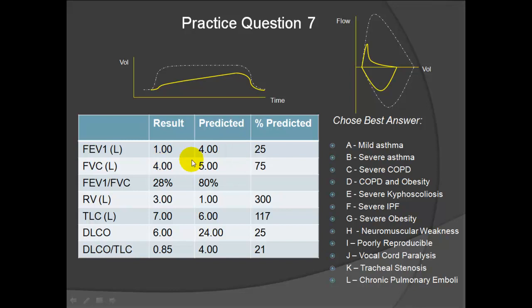Question 7: We see severe obstruction — in fact, we saw this curve earlier in the first example with a severe asthmatic. Obstruction is confirmed by a very low FEV1 ratio and air trapping with an elevated RV and TLC. However, unlike the severe asthmatic who had a diffusion capacity of 105%, this patient has a diffusion capacity of 25%, which stays quite low even when corrected for total lung capacity, consistent with C, severe COPD.